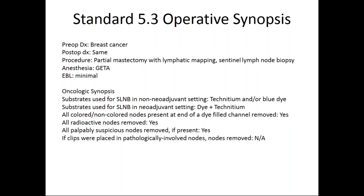We also need to identify that all colored and non-colored nodes present at the end of a dye-filled channel are removed, and that all radioactive nodes are removed. If there are any palpable suspicious nodes, they should be removed. If a clip was placed in a pathologically involved node, we need to document whether those lymph nodes are removed. If the clip was not identified or the decision was made to wait for final pathology for biopsy site change, that should be documented. If a previously pathologically involved node was not identified during surgery or final pathology, the standard would typically be to do a completion axillary dissection.